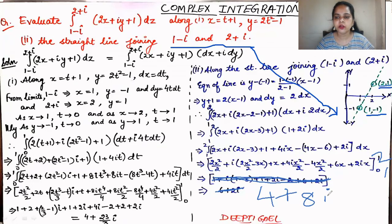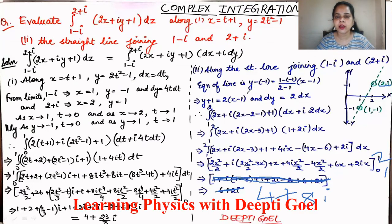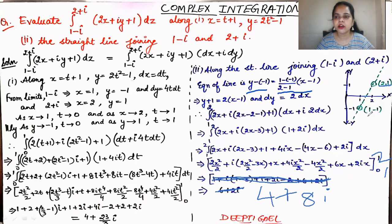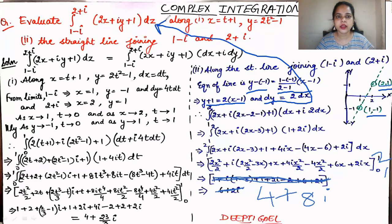Using the two-point form equation, y - y₁ = [(y₂ - y₁)/(x₂ - x₁)](x - x₁), with (x₁, y₁) = (1, -1) and (x₂, y₂) = (2, 1), we get the equation of the line as y + 1 = 2(x - 1). Differentiating gives dy = 2 dx. Substituting y and dy, the integral is now in x with limits 1 to 2, giving the answer 4 + 8i.